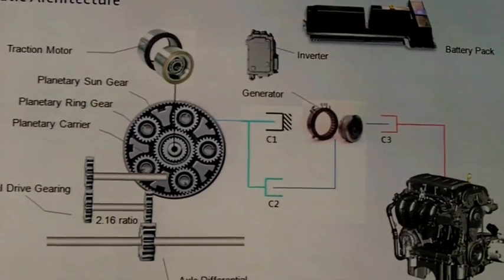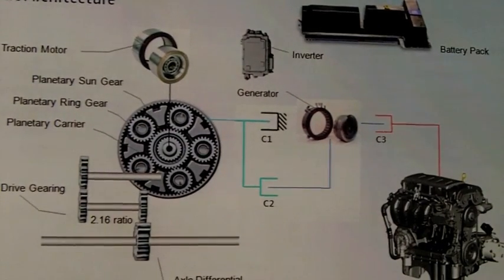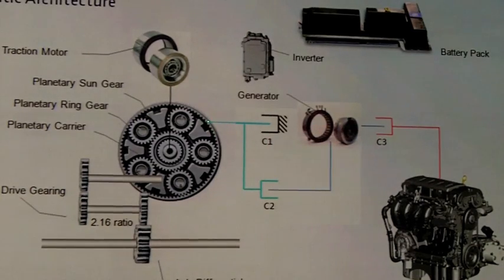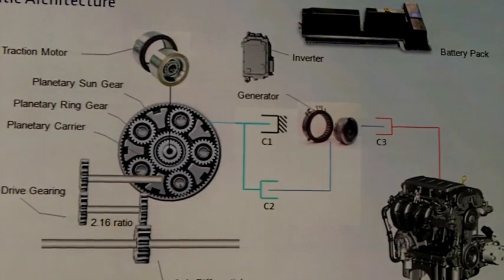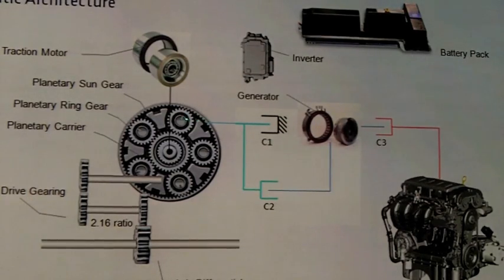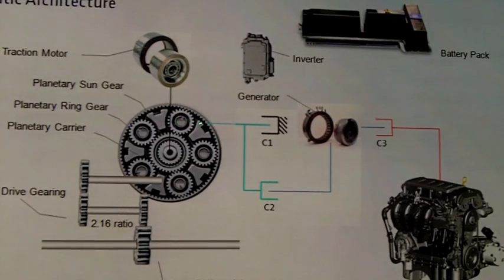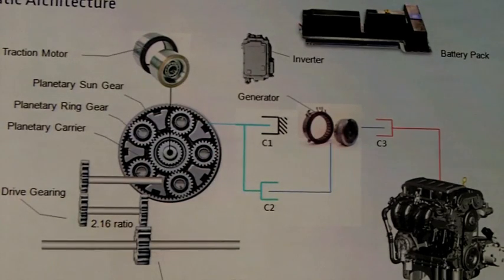And here's the internal combustion engine. We then also have the three clutches here between the engine and the generator, here between the ring gear of the planetary and the case, which basically we can hold this still. This clutch is an enabler to hold the ring gear still. And then we have this clutch where we could connect the generator to the ring gear of the planetary.